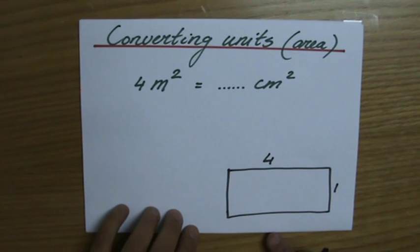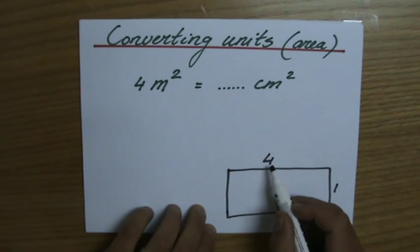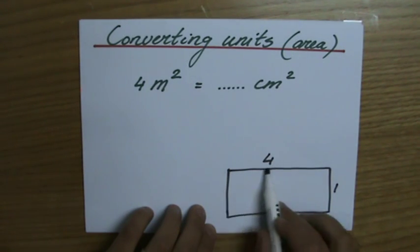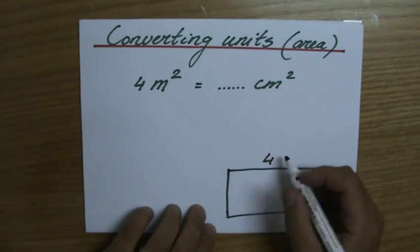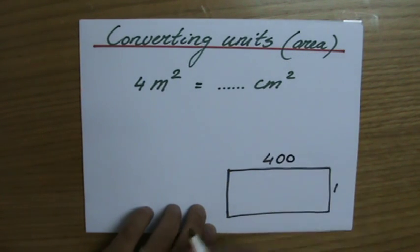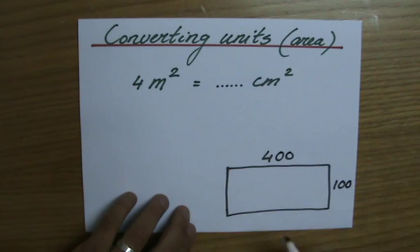Another question is, well, what is that in square centimeters? Now I convert each length into centimeters. So 4 meters are 400 centimeters, and 1 meter is 100 centimeters, and then I find the actual area.